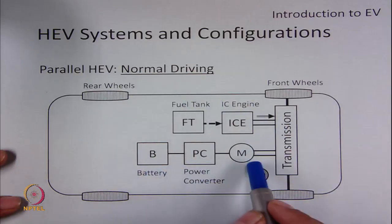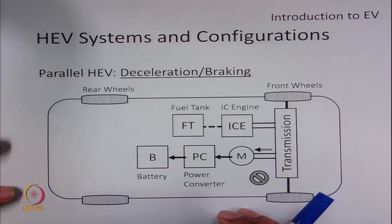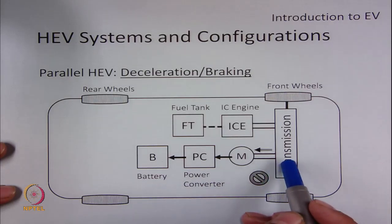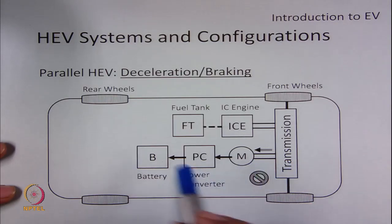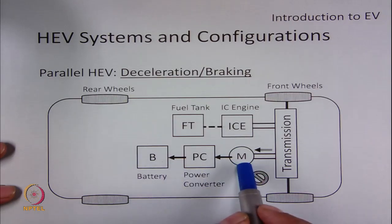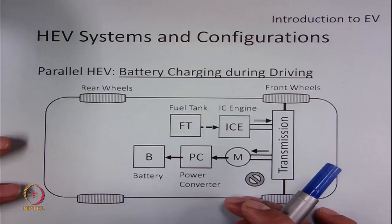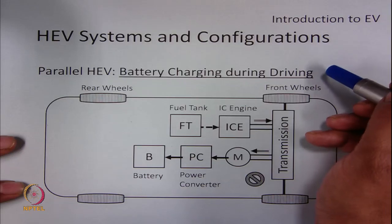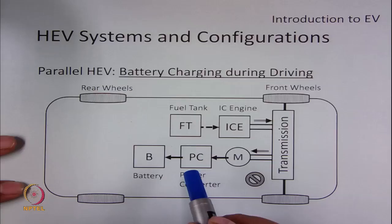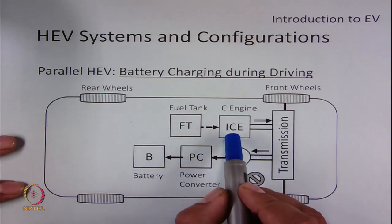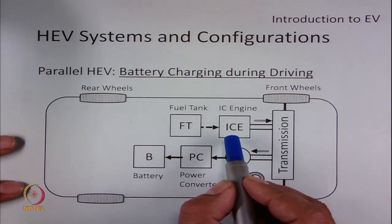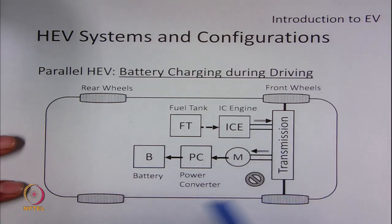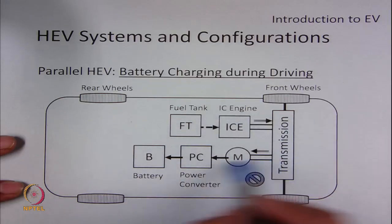During normal driving, the electrical drive train is in off mode. During deceleration or braking, the electrical drive train is only active, and power is recovered from the wheels; the recovered energy is stored in the battery by operating the motor as a generator. In a parallel HEV, if there is a requirement for battery charging while the vehicle is moving, it has to be done via the transmission. The mechanical energy required comes from the IC engine-based system, and a part of it is transferred to the battery by operating the motor as a generator, so power flow happens through the transmission.